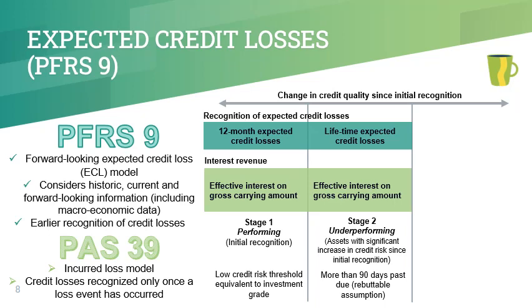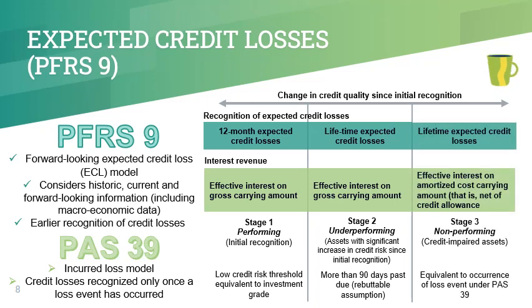Stage 2 is where credit risk has increased significantly since initial recognition. When a financial asset transfers to Stage 2, entities are required to recognize lifetime ECL, but interest income will continue to be recognized on a gross basis. The rebuttable assumption is that financial assets which are 90 days past due are considered in Stage 2. Stage 3 is where the financial asset is credit impaired — effectively the point at which there has been an incurred loss event under the PAS 39 model. For financial assets in Stage 3, entities will continue to recognize lifetime ECL, but they will now recognize interest income on a net basis, meaning interest income is calculated based on the gross carrying amount of the financial asset less ECL.